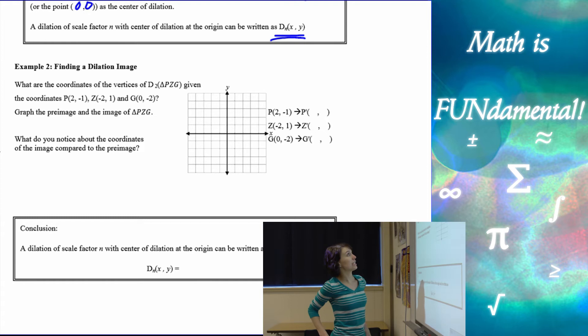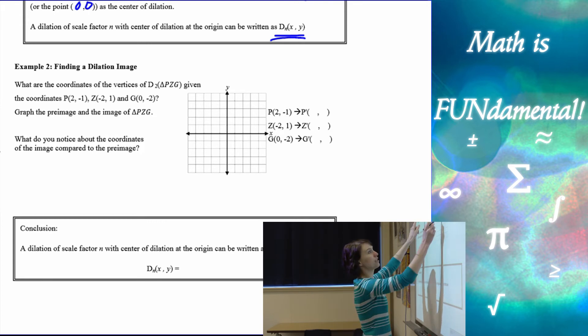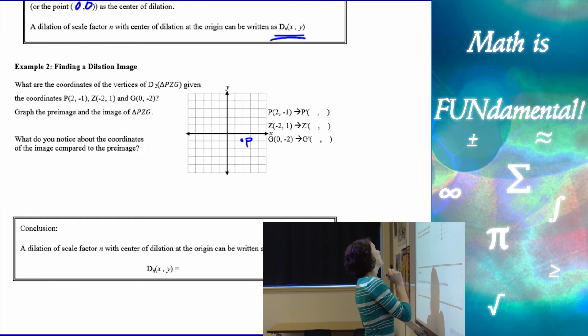What are the coordinates of the vertices of D2 triangle PZG given our coordinates? So what it's saying is it's a dilation with scale factor 2 of these 3 points, which is our pre-image points. So here I've got positive 2, negative 1, and negative 2, positive 1, and 0, negative 2.